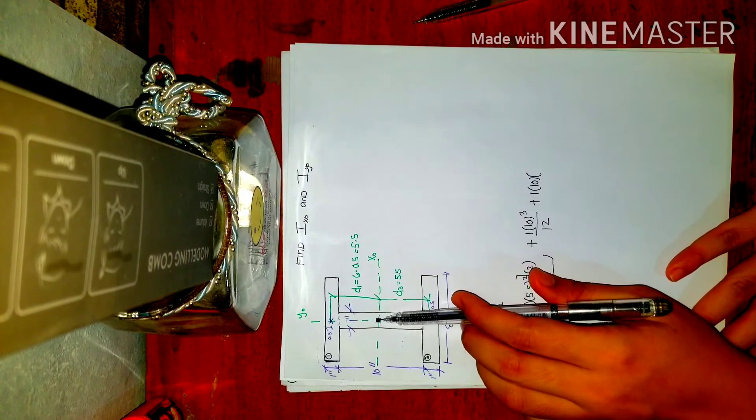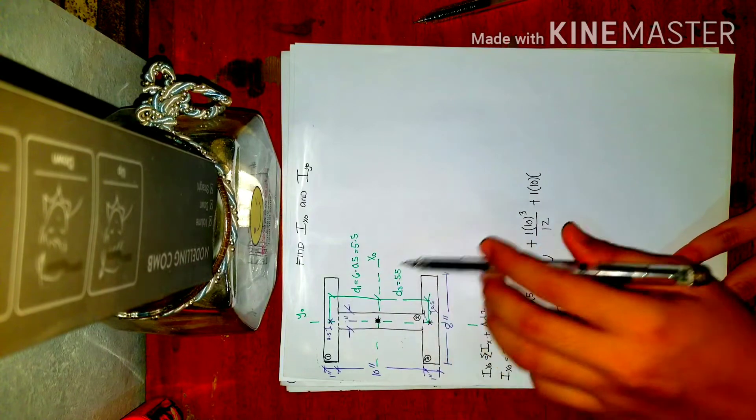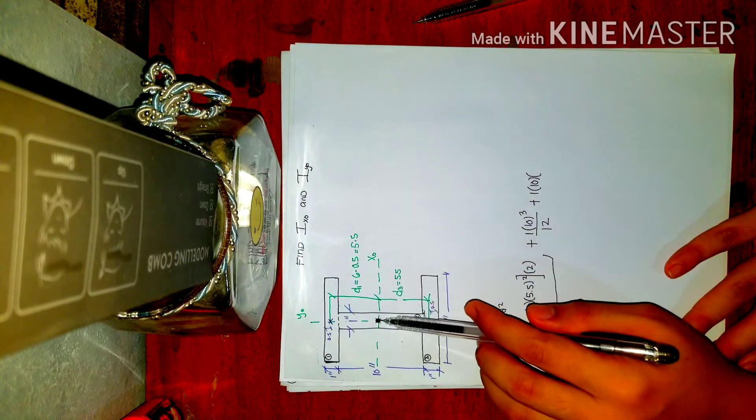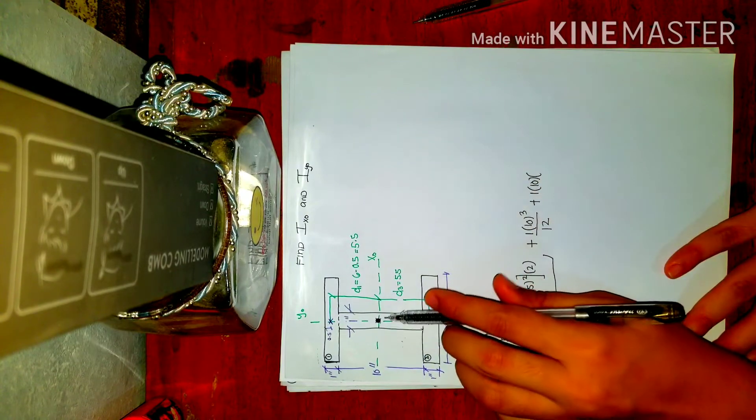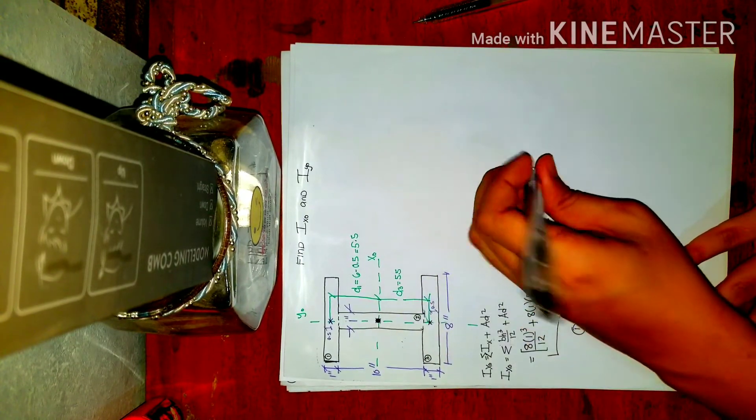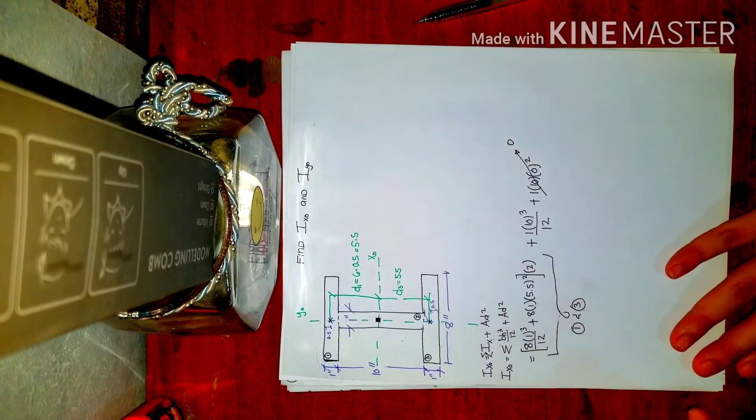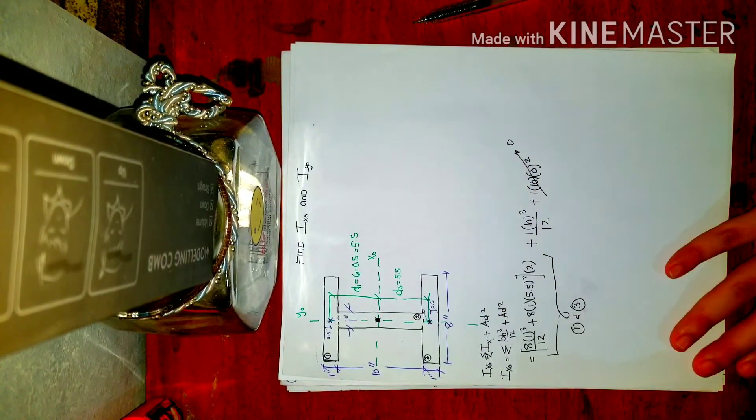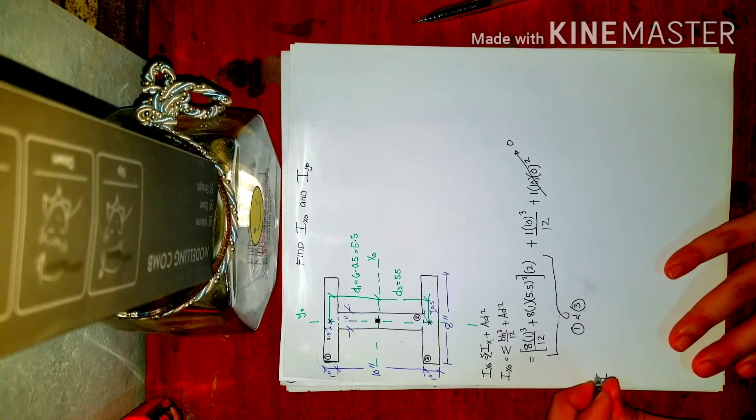Since it coincides with the centroid of our composite figure, the distance of the centroid of our area 2 has no distance, they're overlapping. Correct. So this is 0 squared. So I can just disregard it from the equation. And say it equals 0.